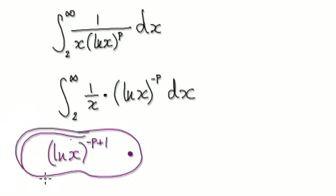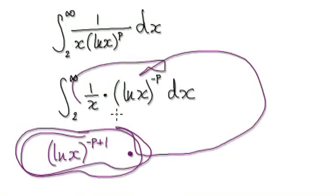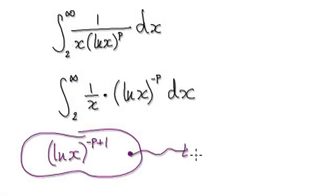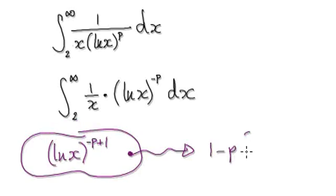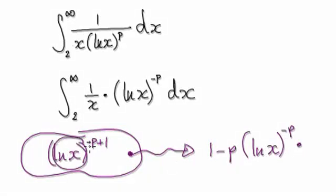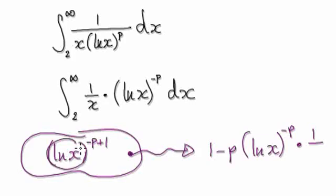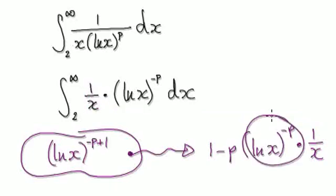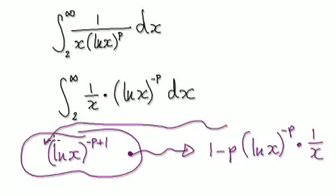Remember, you're looking for something such that when you differentiate it, it gives you this. This is our initial guess. When we differentiate it, the power comes down — I'll write it as one minus p — the bubble stays intact as the natural log of x. The power gets reduced by one, so minus p, and then times the derivative of the bubble itself. Luckily, this is the exact derivative of this. This matches with this, and this matches with this, but we don't want this extra factor. So go back to the initial guess and make the adjustment — divide by one minus p.